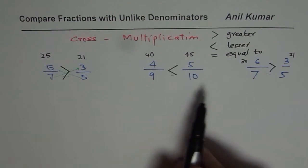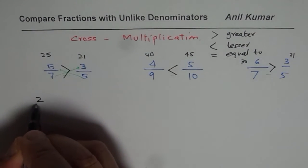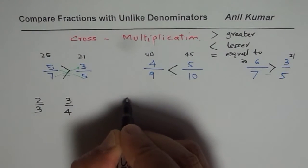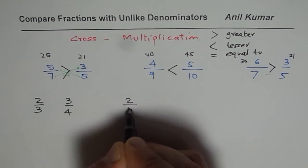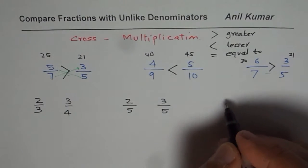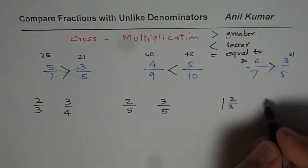Now follow these strategies and answer the following practice questions. So we have 2 over 3, 3 over 4. 2 over 5, 3 over 5. We could have 1 and 2 over 3, and 1 and 3 over 7.